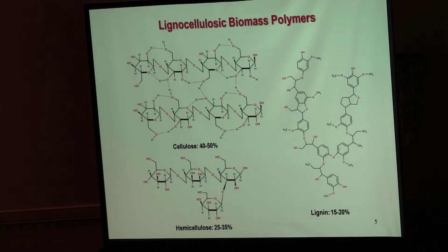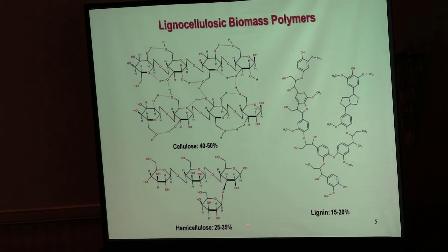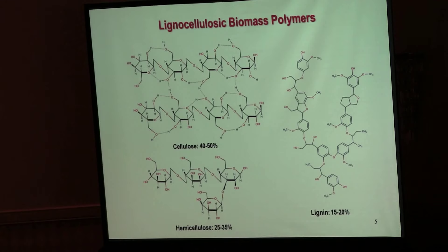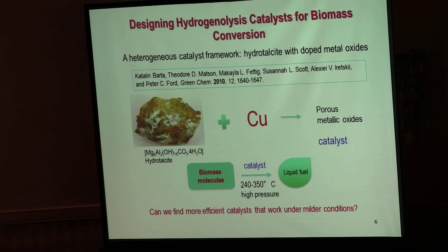When you look at biomass polymers, there are three main categories of biopolymers. First is cellulose, about 40 to 50 percent. Hemicellulose is about 25 to 35 percent, and lignin is about 15 to 20 percent. When you look at the chemical structures of all these polymers, one feature you can notice is the C-O ether bonds throughout. We want to degrade them into small molecules and hopefully convert them to alkanes with carbon numbers of 6 to 18 that will be used as liquid fuels.